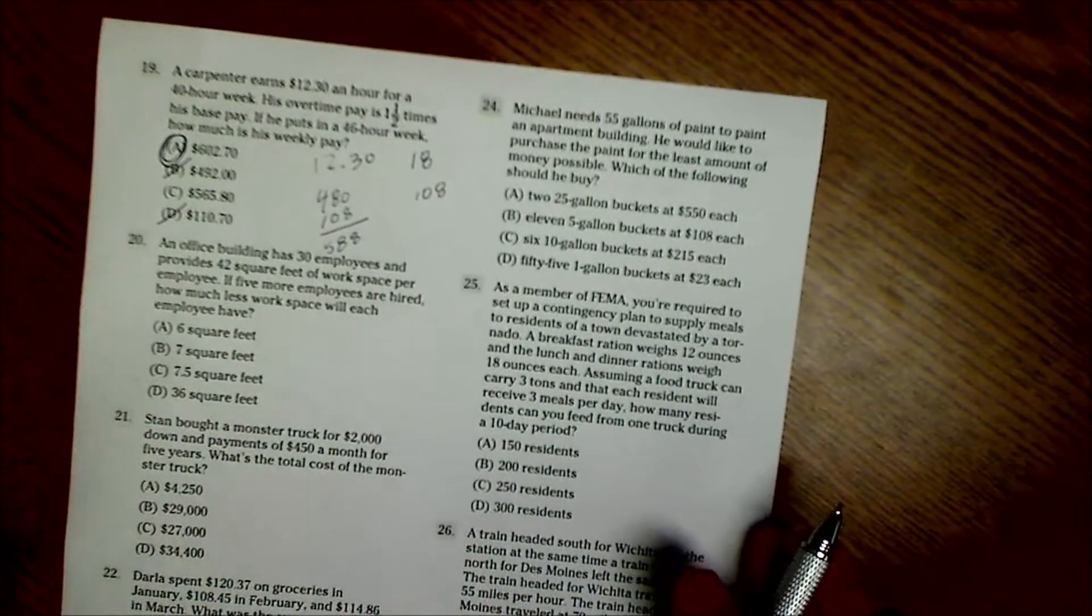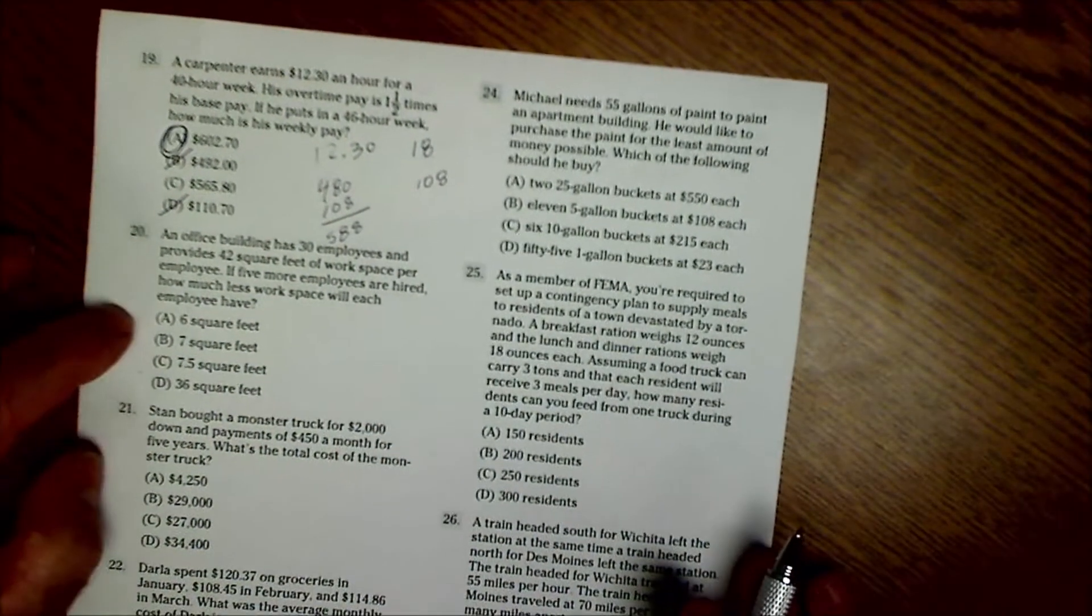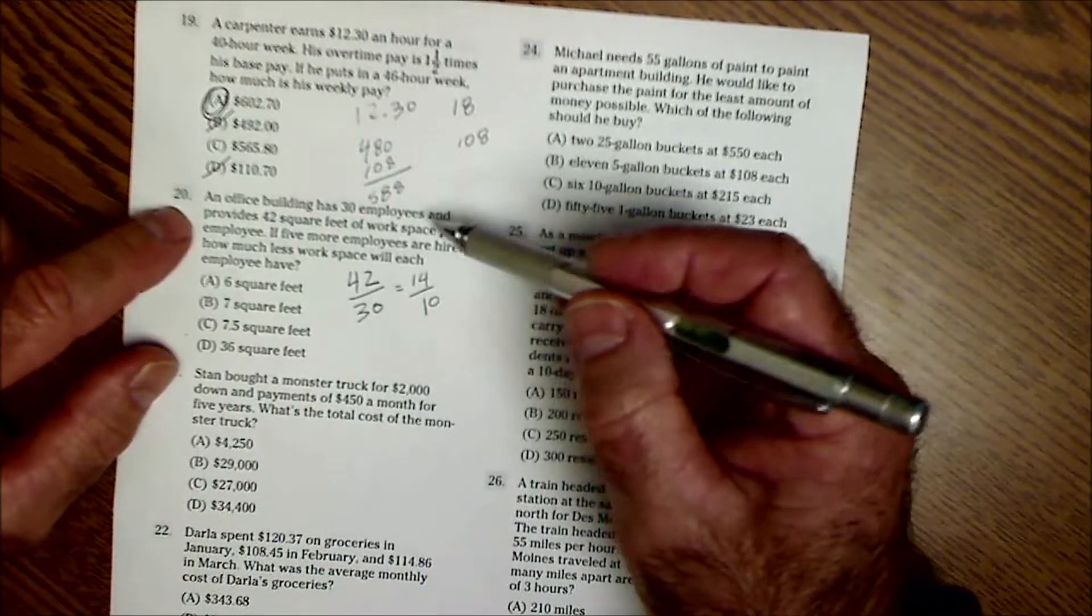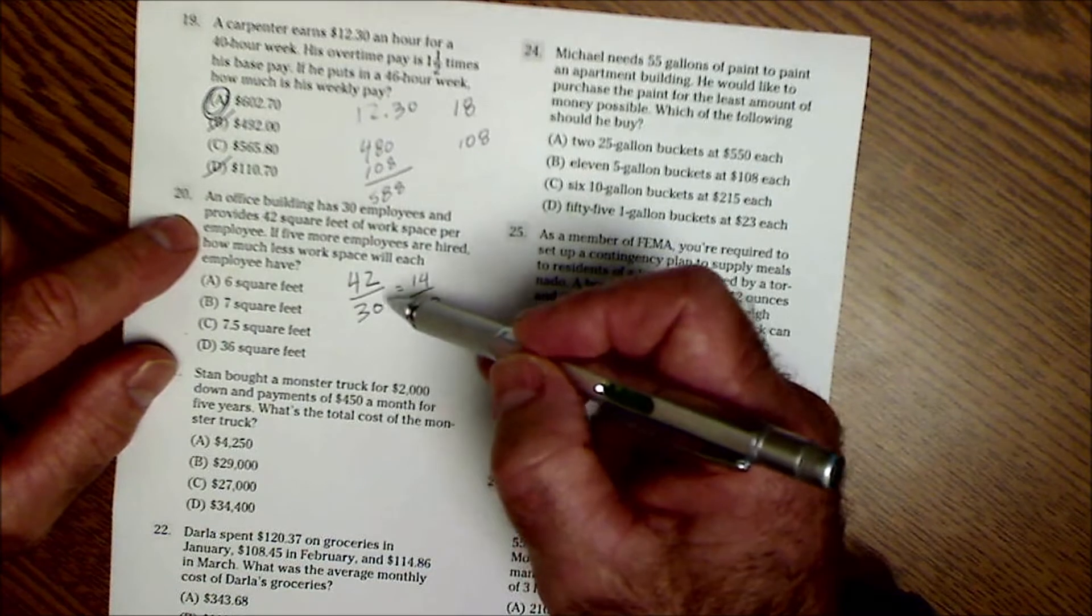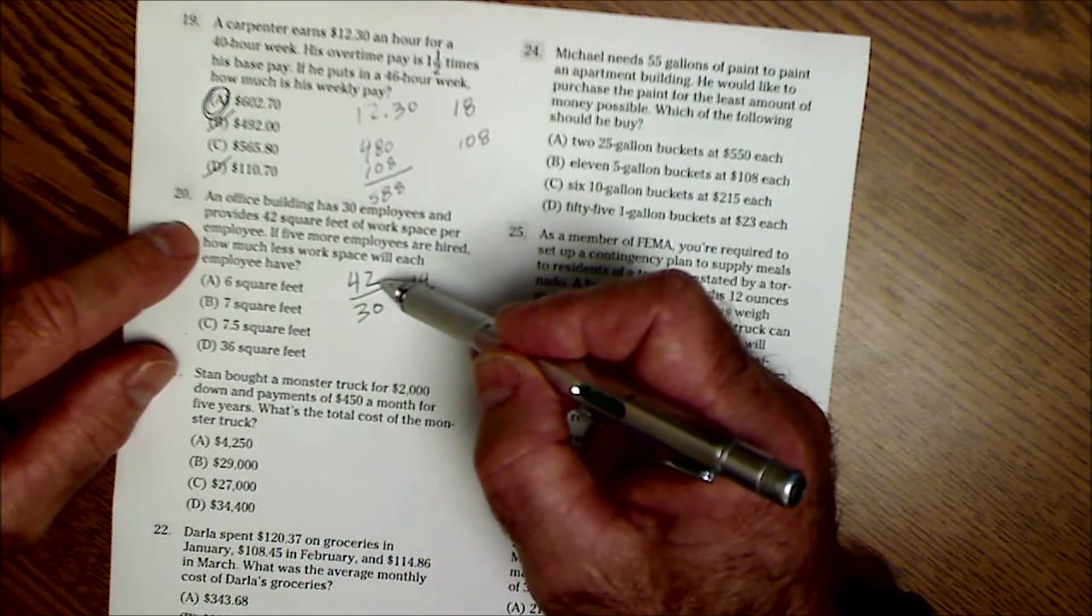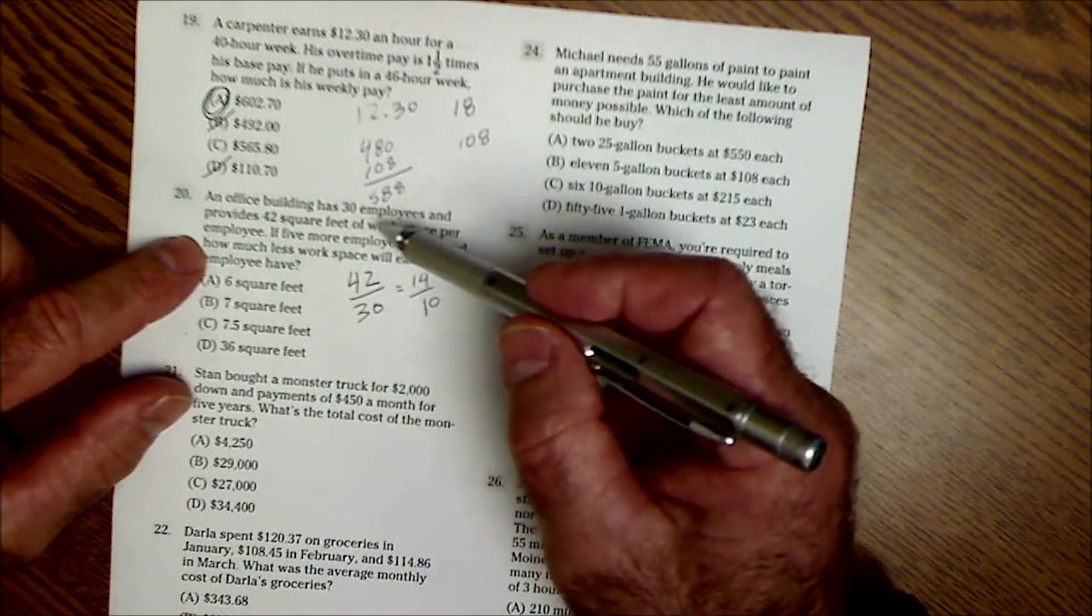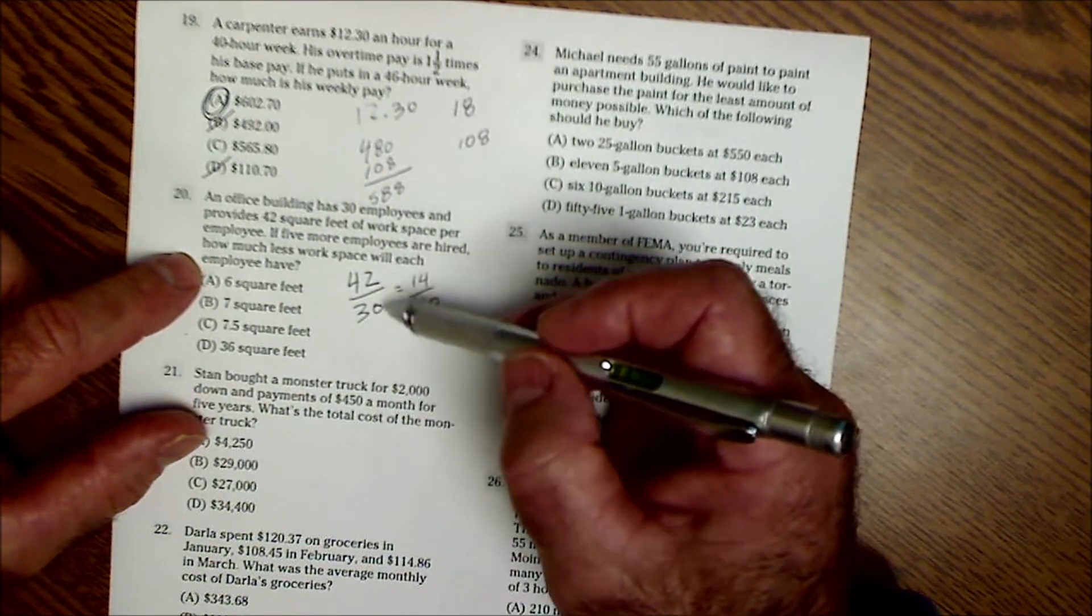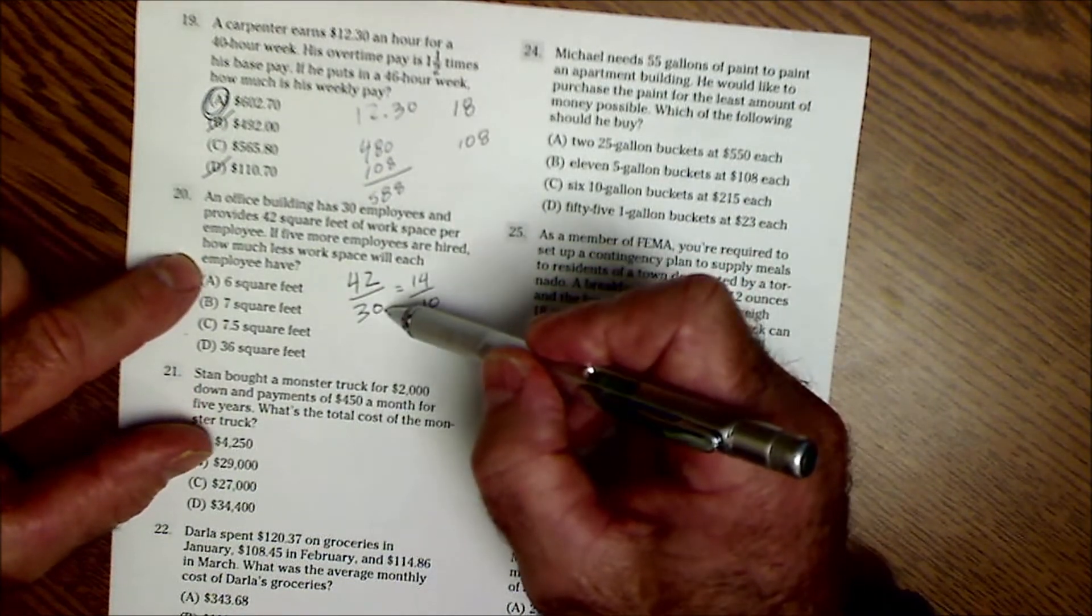Again, there's no calculator on this test and you're kind of looking for tricks on how to do it without a calculator. Number 20, an office building has 30 employees and has 42 square feet. More employees are added, how much workspace will each employee have? Square feet per employee.